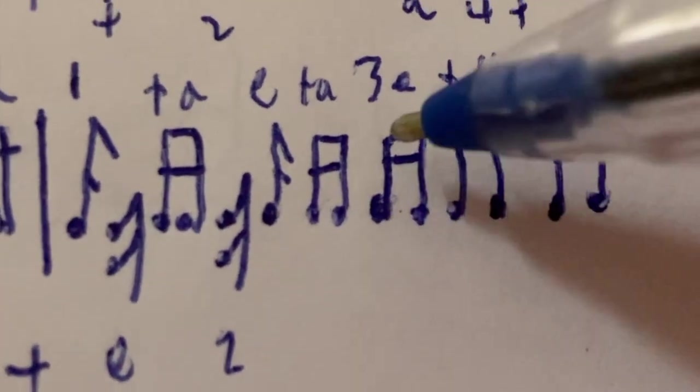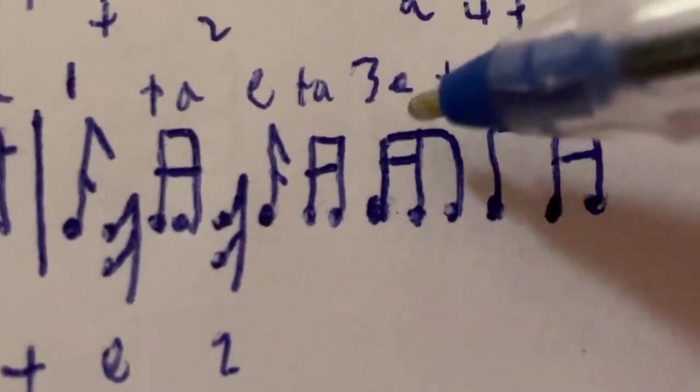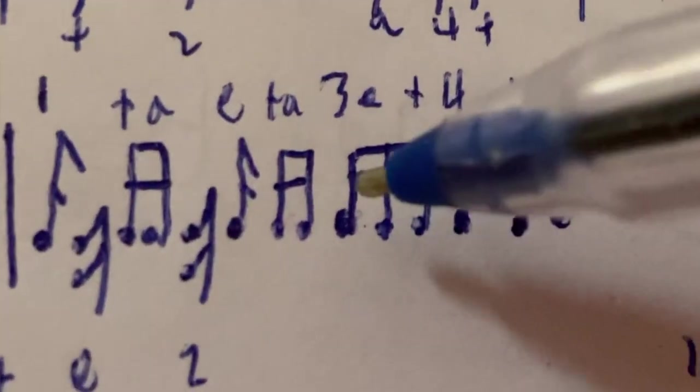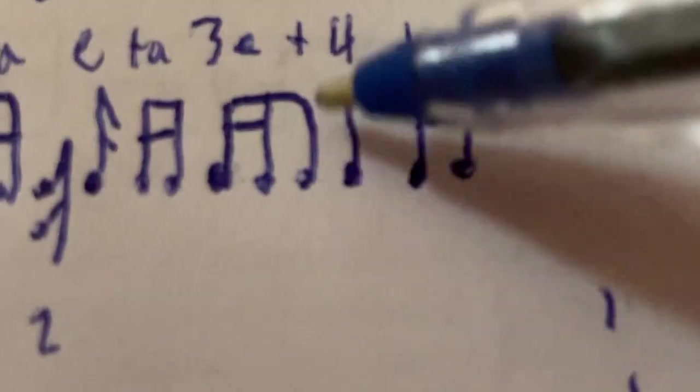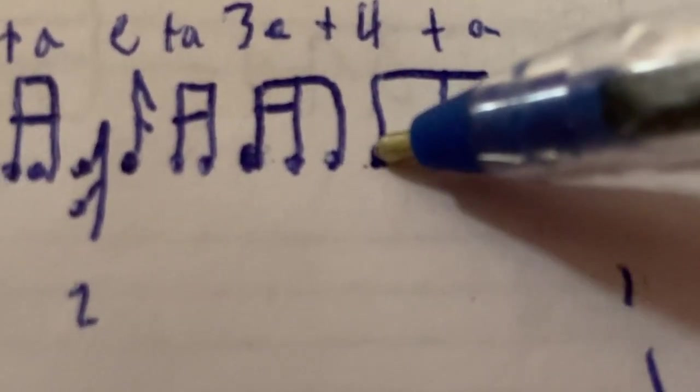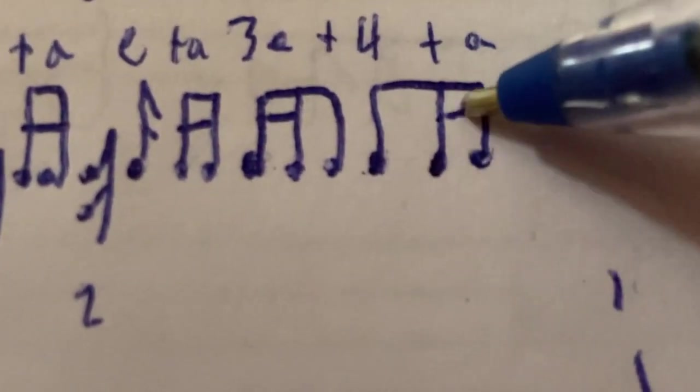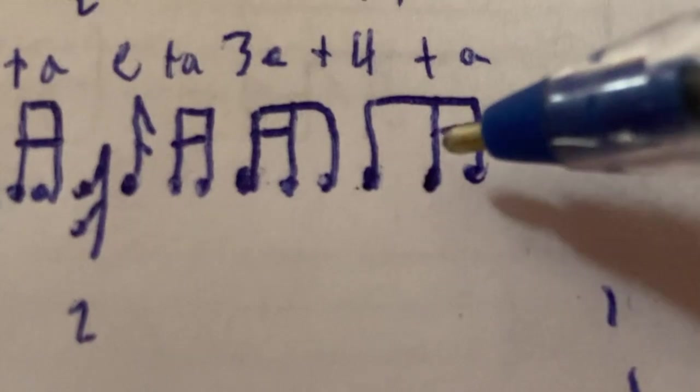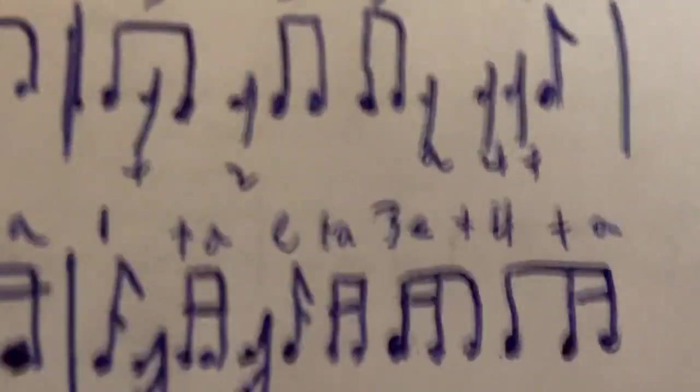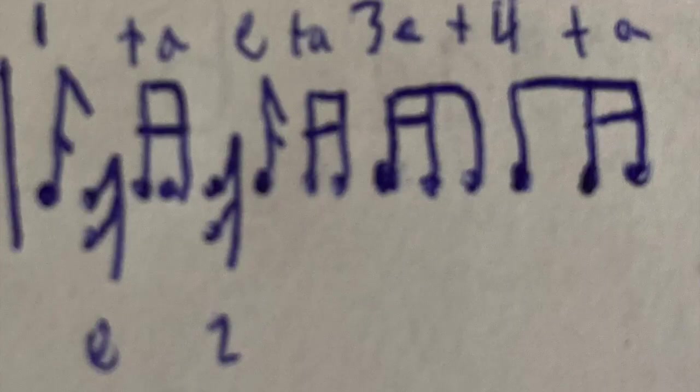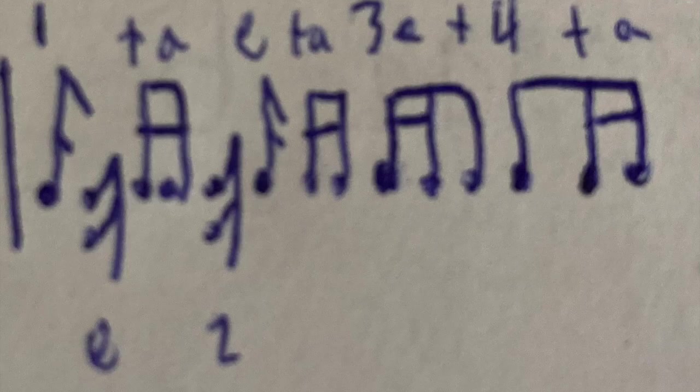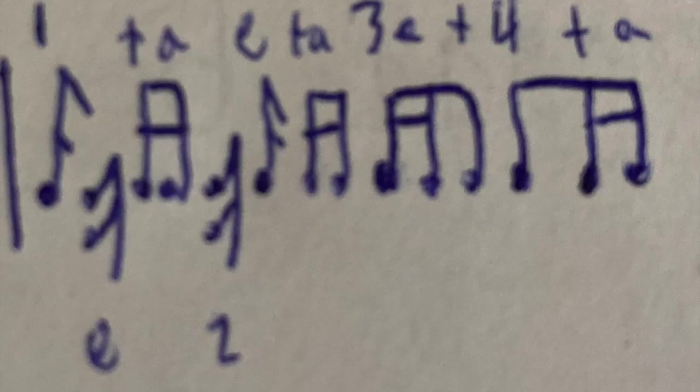And then we have what trips people up: two sixteenth notes and then an eighth note, so it's 3 E and, and that eighth note is the and. Then we have the opposite - an eighth note and then two sixteenth notes: 4 and uh. You see that the lines, we have to focus on where the lines are. How many lines does each note have? How many lines comes before it and how many lines comes after it?